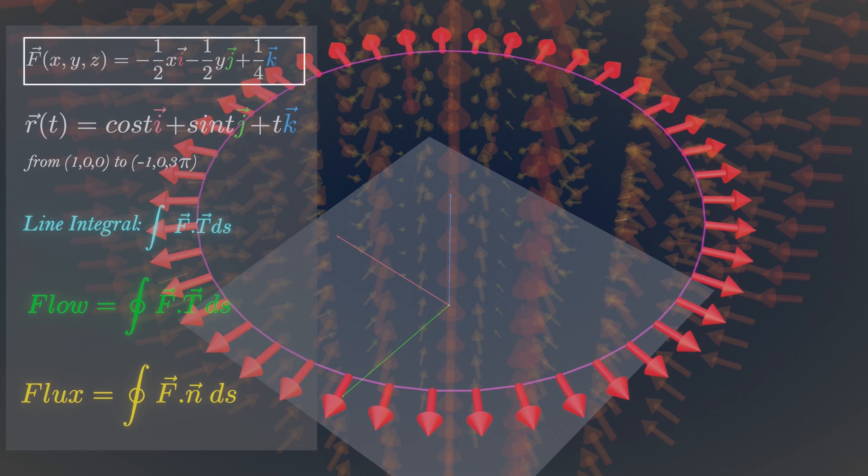This vector field can be anything: velocity field, force field, magnetic field, electric field. The logic is the same. Okay, that's some definition of vector line integral.